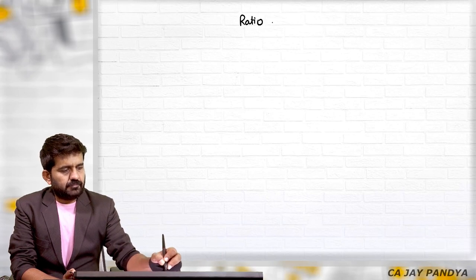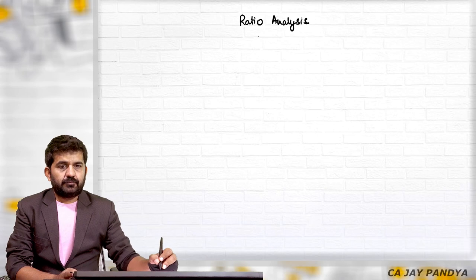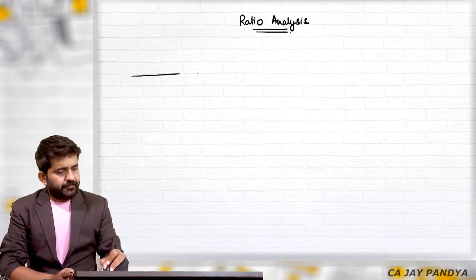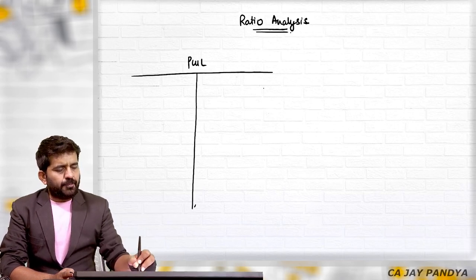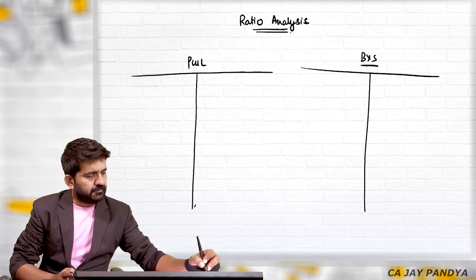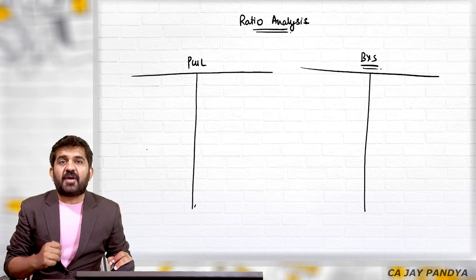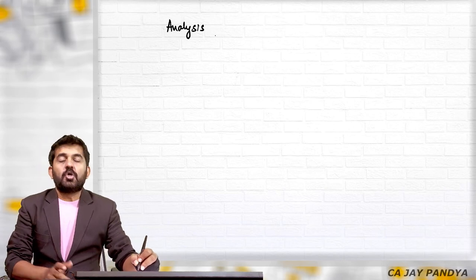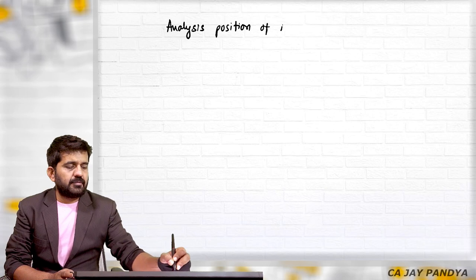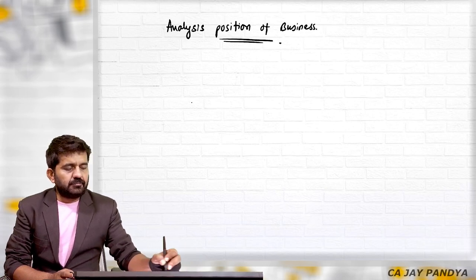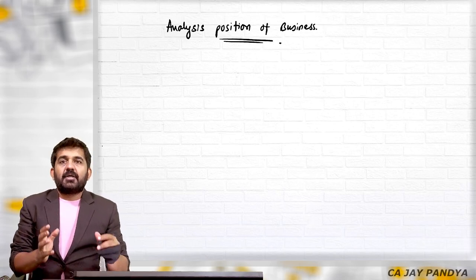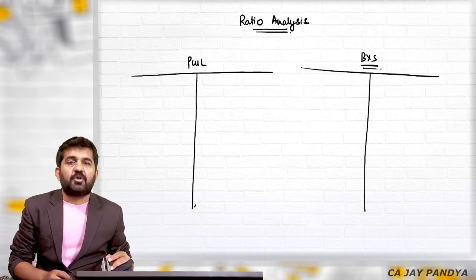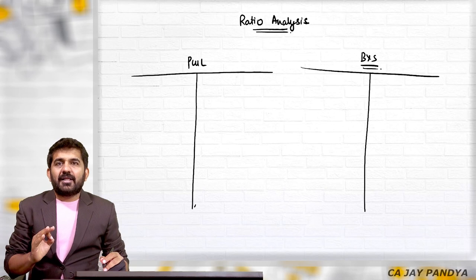What we are going to learn in today's lecture is ratio analysis. Normally we have a profit and loss account and balance sheet of a company. How to prepare a P&L account and balance sheet is the work of the accountant. As a financial manager, I want to analyze the position of this business — not only about profitability. Whether we can analyze this business by the profit and loss account and balance sheet, the answer is yes. How can we analyze it?